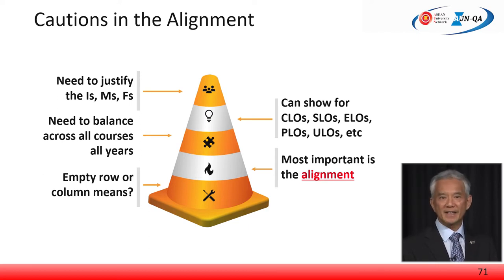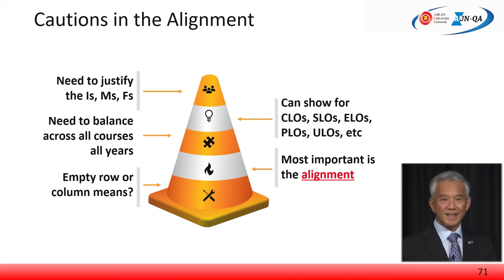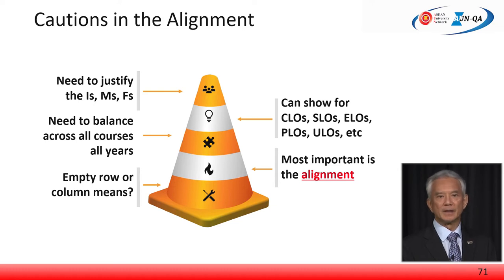There needs to be a good spread among the various levels of courses to the various levels of ELO. There are many kinds of learning outcomes, including course learning outcomes, student learning outcomes, expected learning outcomes, program learning outcomes, university learning outcomes, and so on. One can show all kinds of mapping to learning outcomes, but the most important concept in the map is to show the alignment, which will be scrutinised closely.